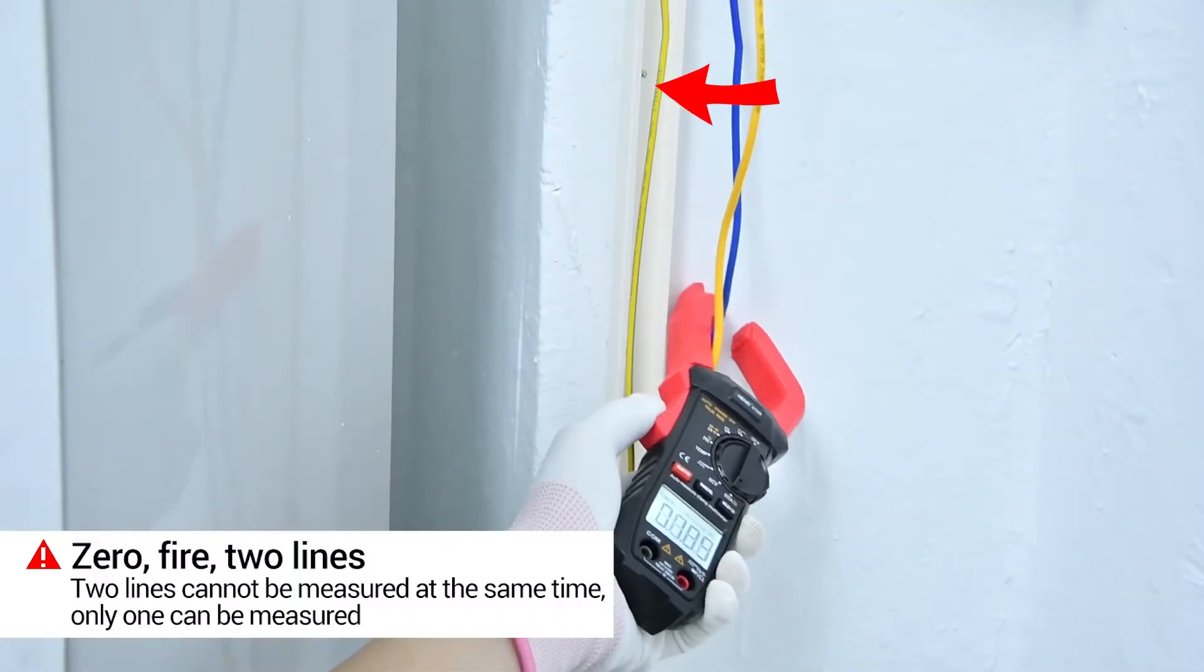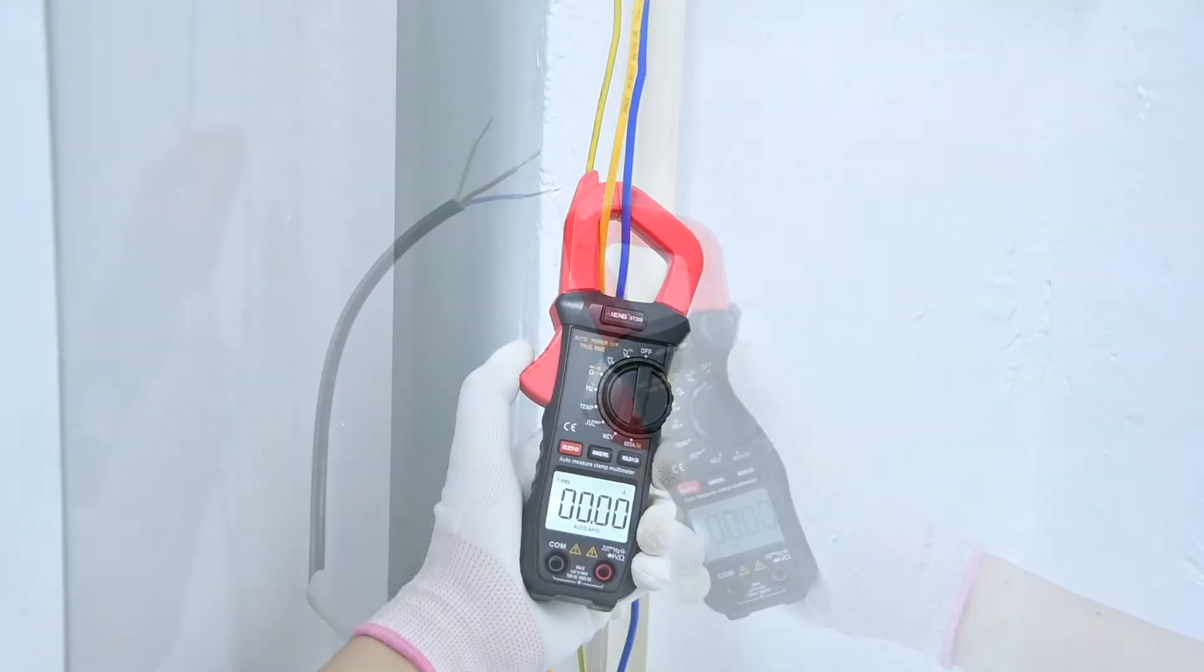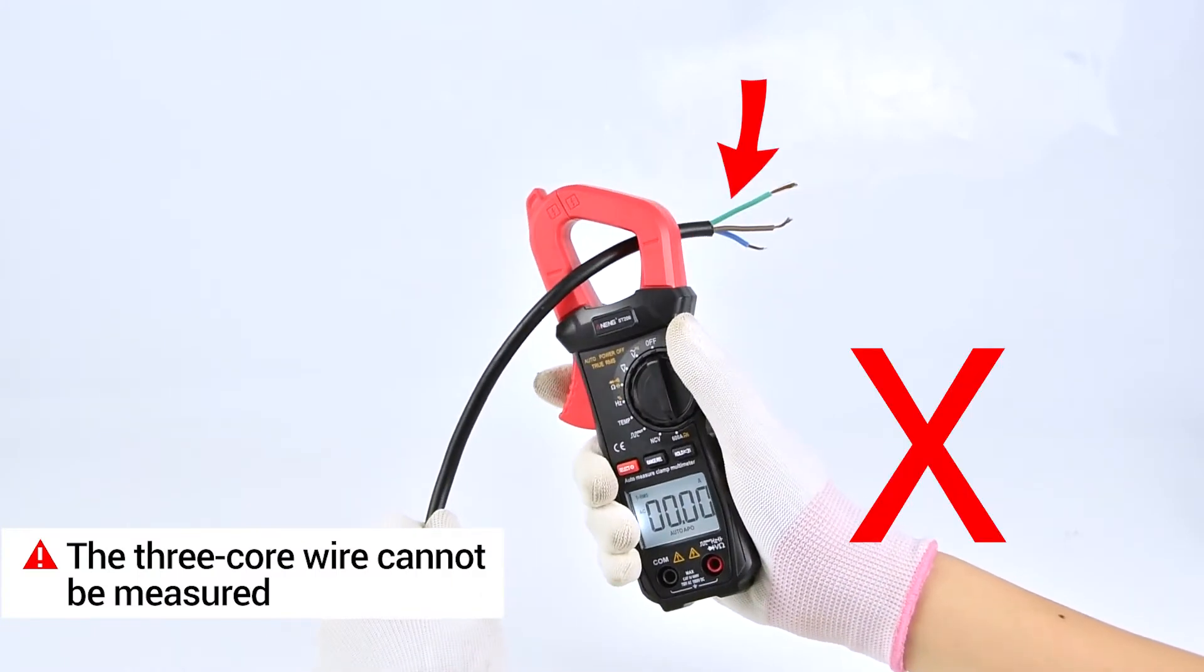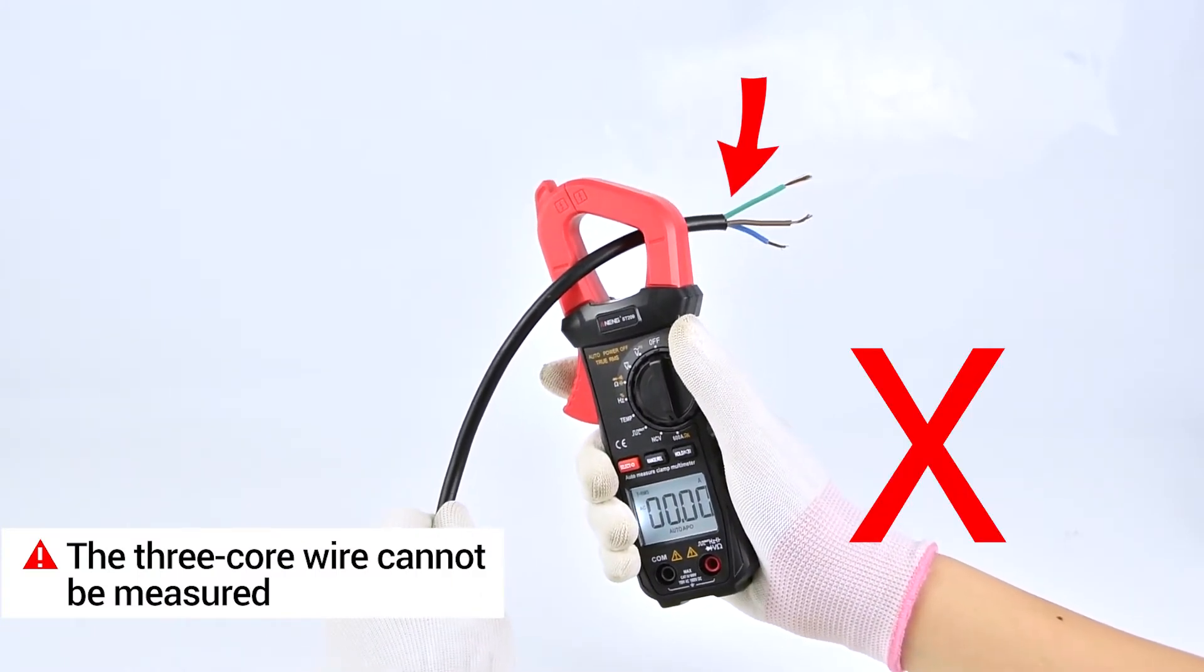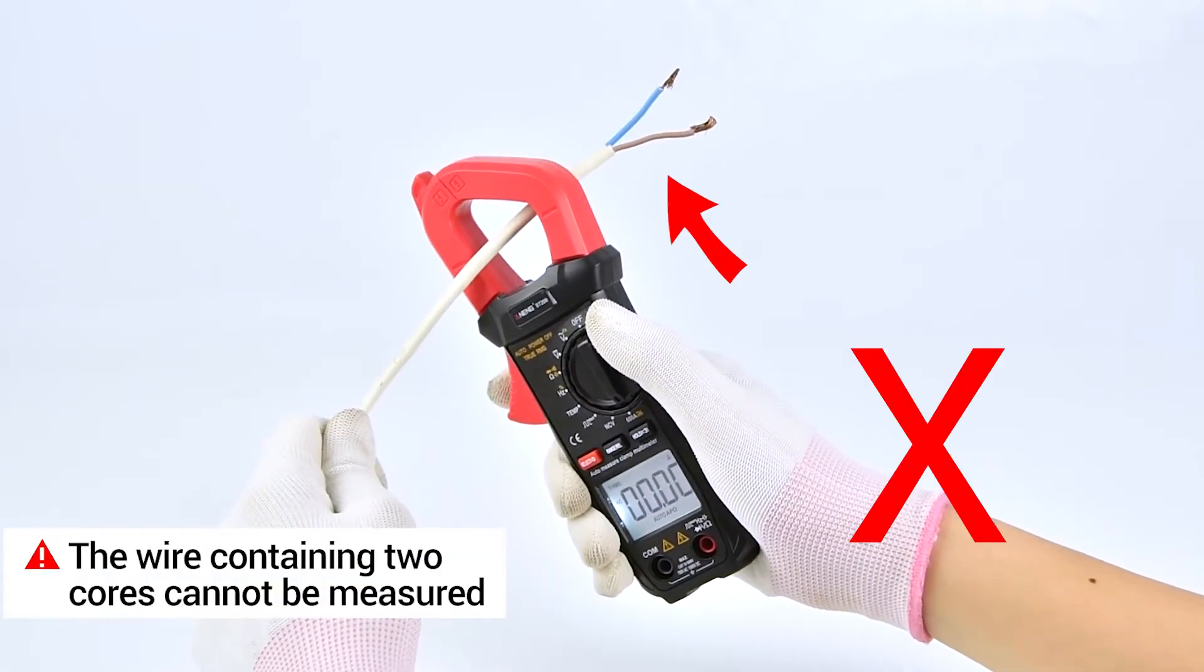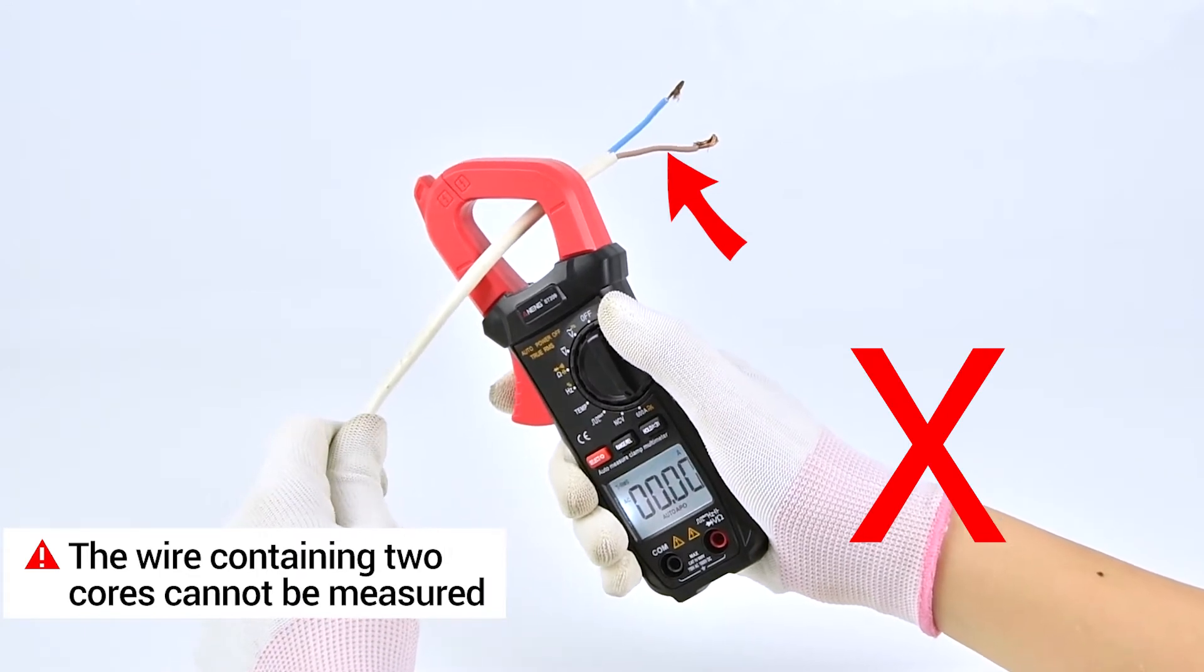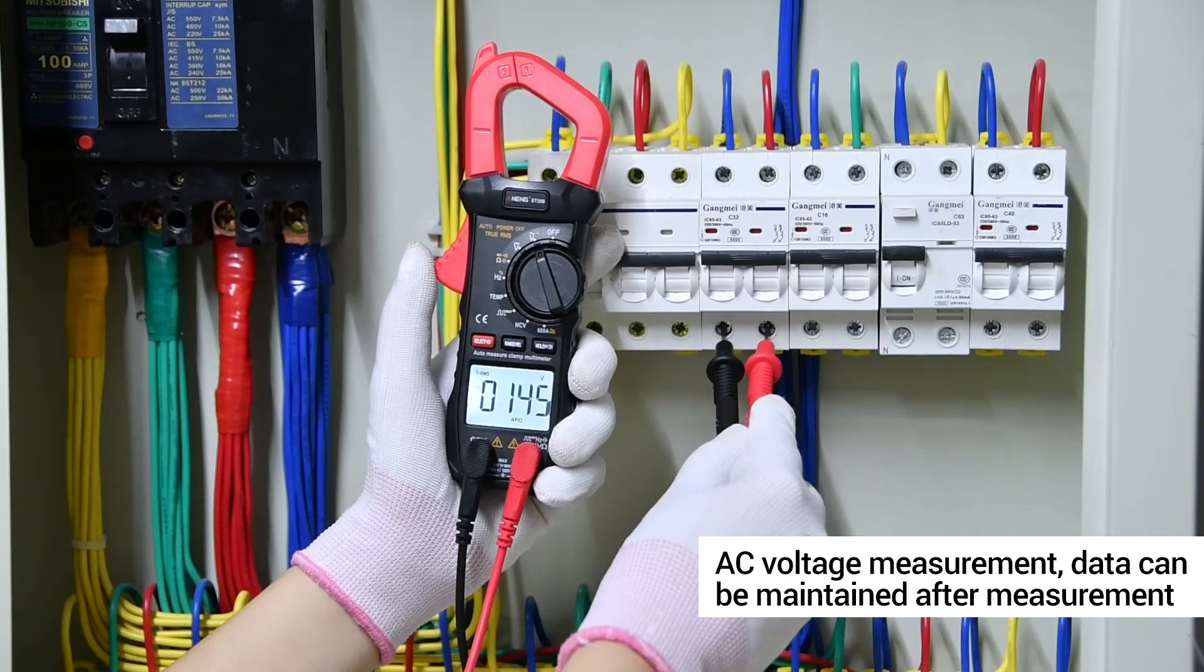Live zero line cannot be measured together. The line containing three core wires cannot be measured. The wire containing two core wires cannot be measured. AC voltage measurement.